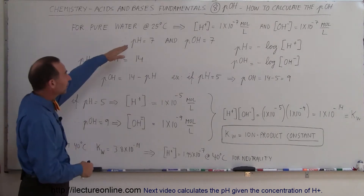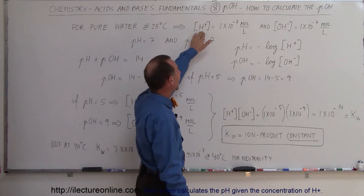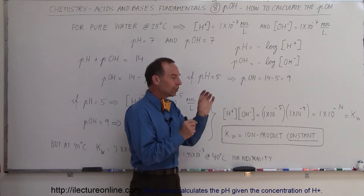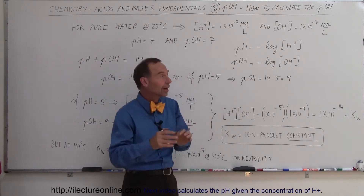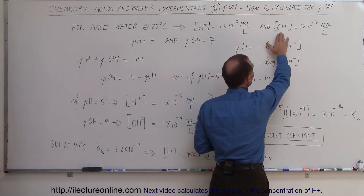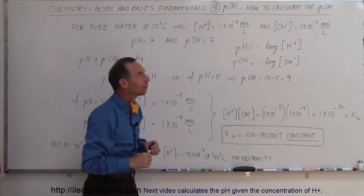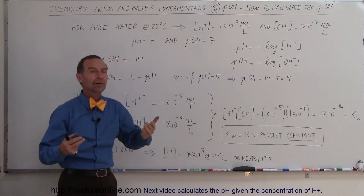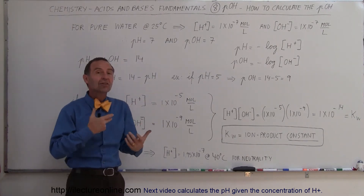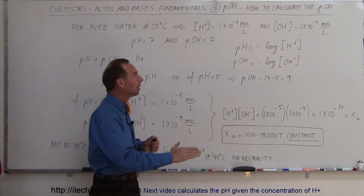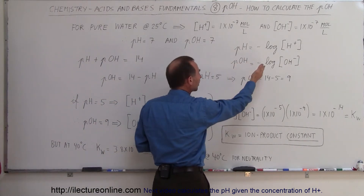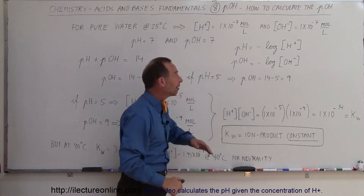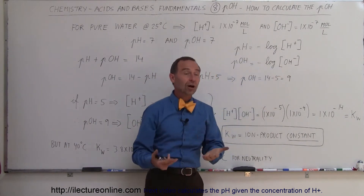For pure water at 25 degrees centigrade, the concentration of the hydrogen ion is 1×10⁻⁷ moles per liter. At neutrality, there's an equal amount of hydrogen ions as hydroxide ions, so the concentration of hydroxide ions is also 1×10⁻⁷ moles per liter. The pH is calculated as negative the log of the hydrogen ion concentration, and the pOH is calculated as negative the log of the hydroxide ion concentration.